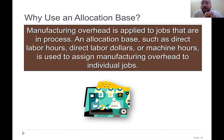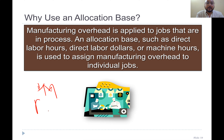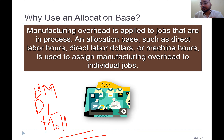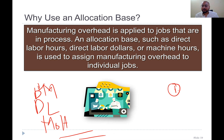In job order costing, using the job cost sheet, we know that manufacturing cost equals direct material plus direct labor plus manufacturing overhead. The sum of these is the manufacturing cost, and when we add non-manufacturing cost we get the product cost. When a factory receives an order — because managerial accounting applies in a factory — factories normally work on advance orders with estimated costs before going into production.